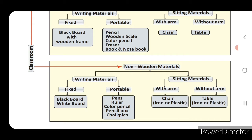Non-wooden materials are similarly classified into writing materials and sitting materials. Writing materials are fixed — blackboard, whiteboard — or portable — pens, ruler, color pencil, pencil box, chalk pieces. Sitting materials are with arm or without arm: chair or plastic table.